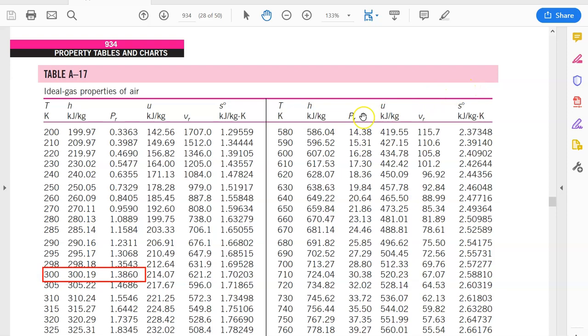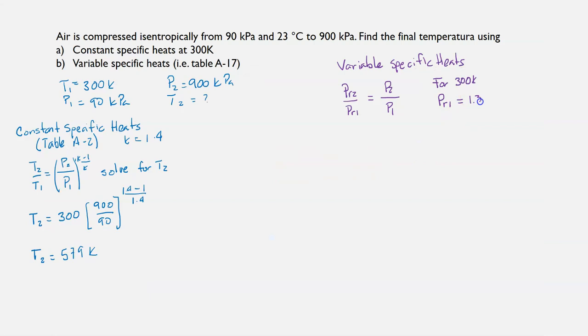At 300 we notice that pr is 1.386. Now pressure 2 and pressure 1 we know, so we can compute pr2.